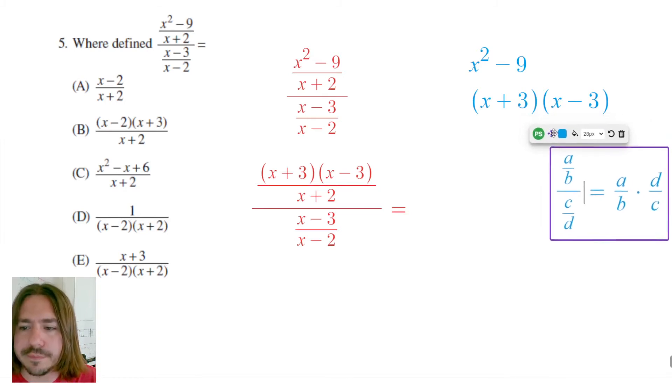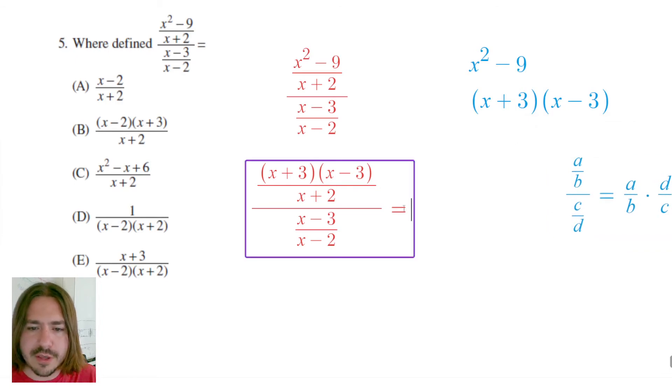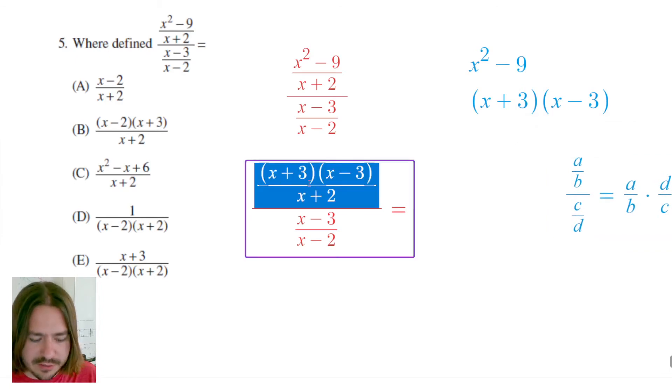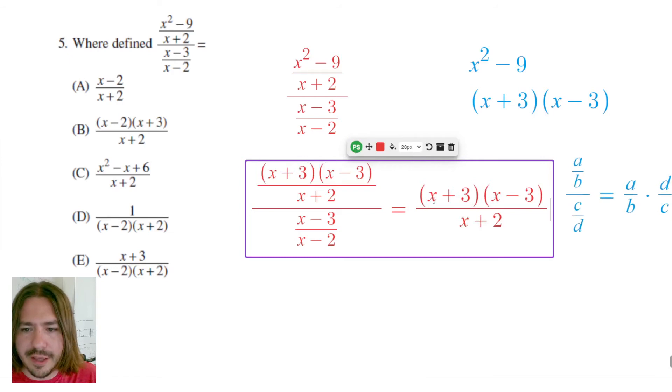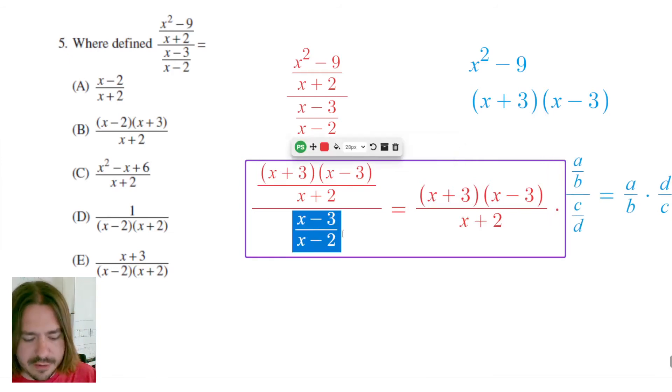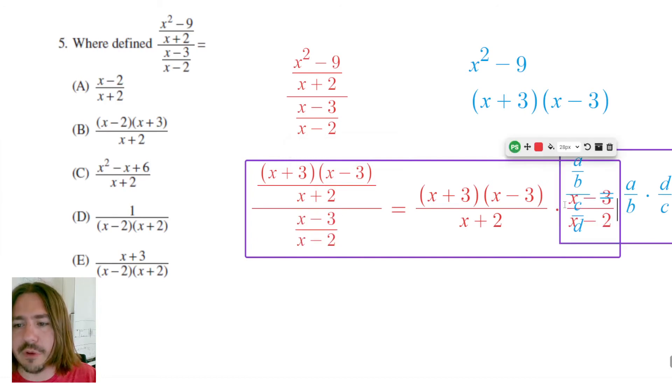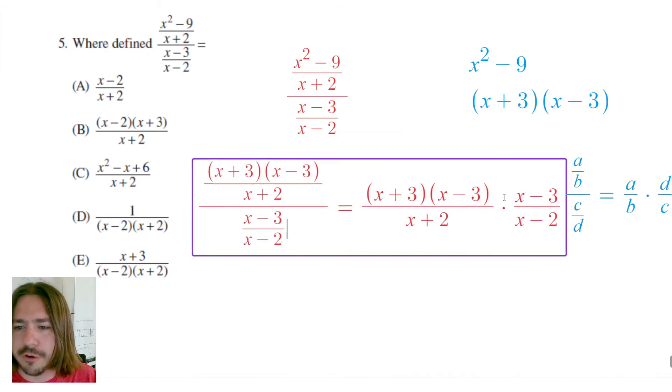I'm going to rewrite this expression as this whole numerator times the denominator, but not just the denominator, but the reciprocal of the denominator. I'm kind of running into my scratch work over to the side, so I'm going to bring this over. This is going to be X minus 2 on top, X minus 3 on the bottom.